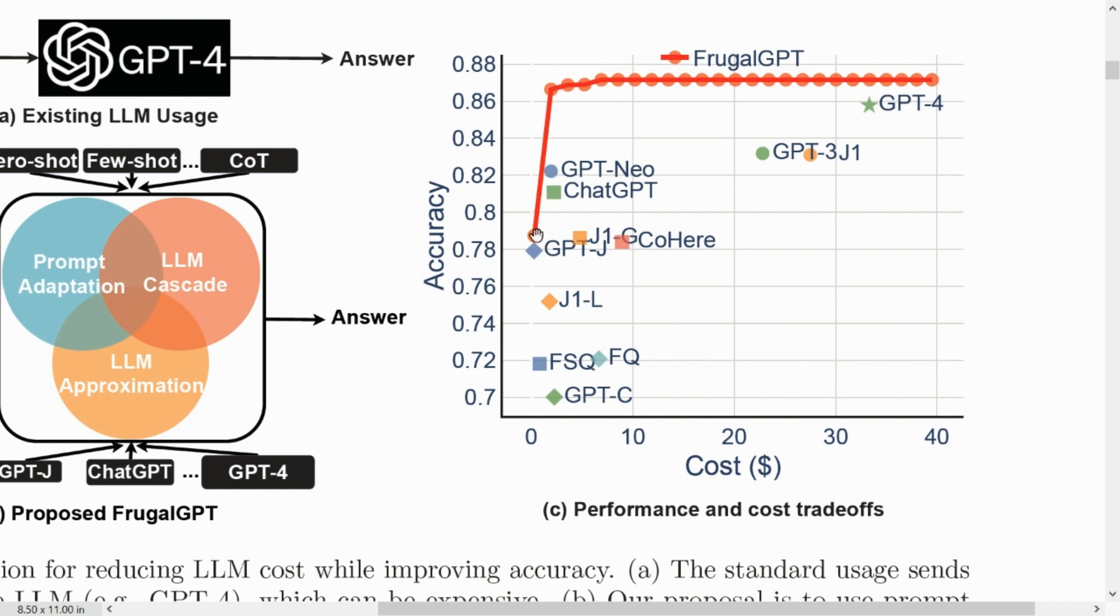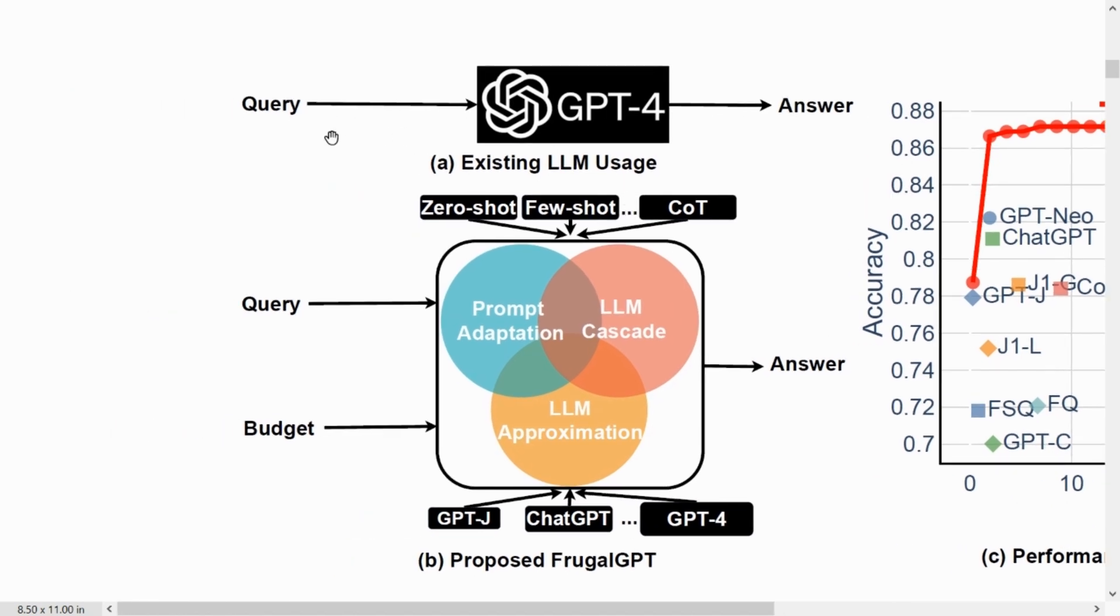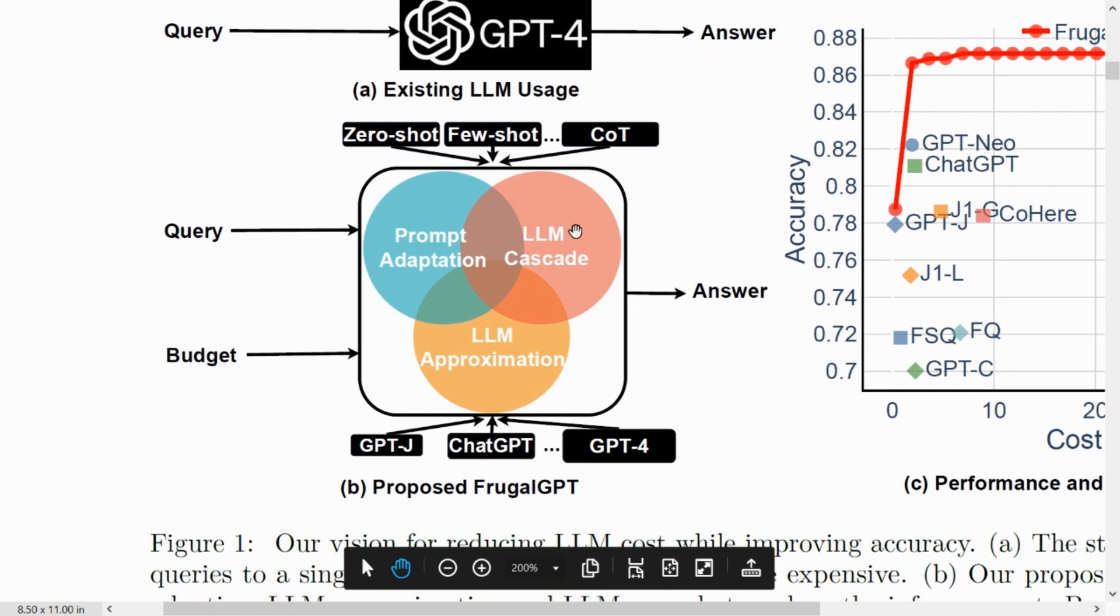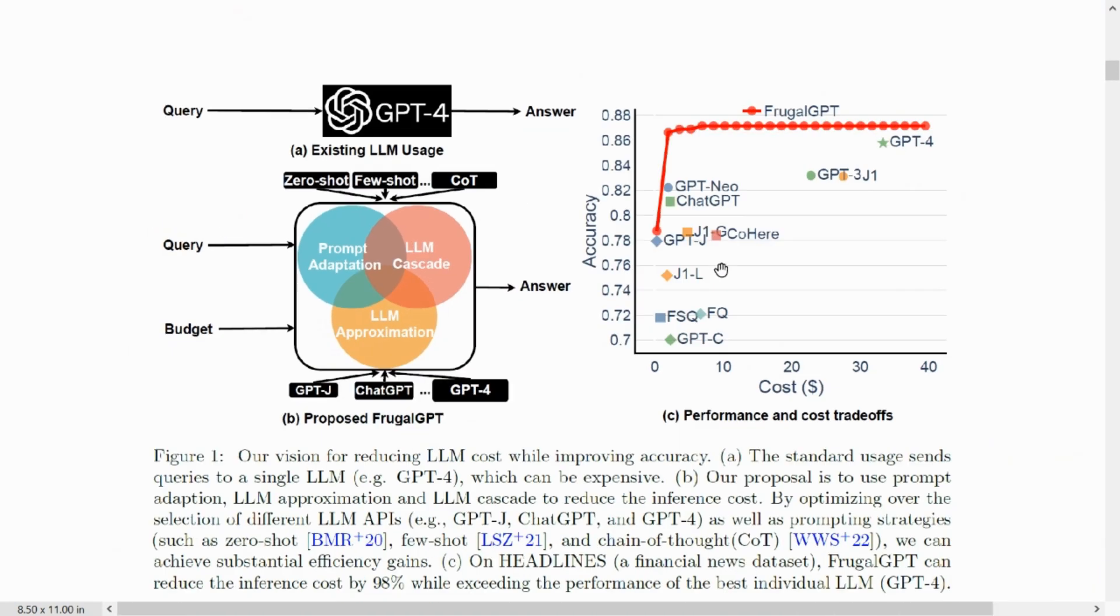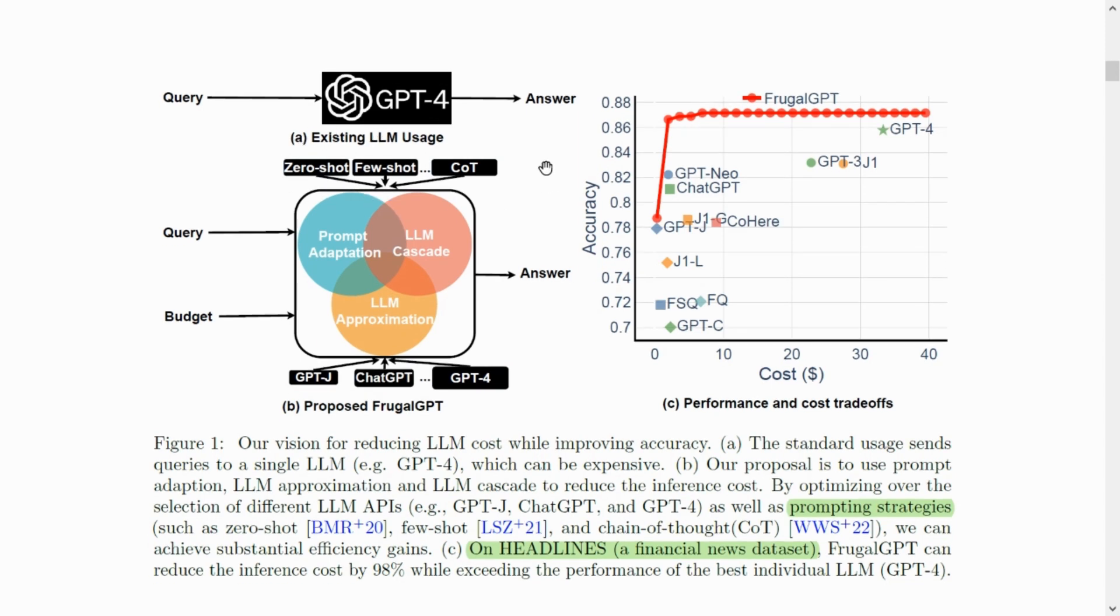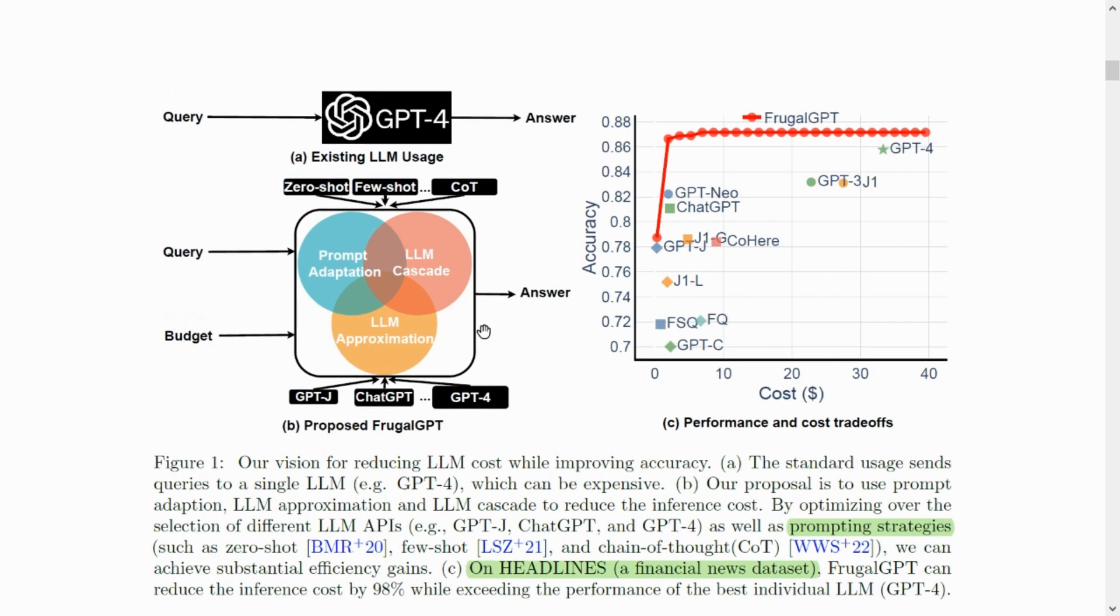The new GPT that the paper has termed is the FrugalGPT. So if you see in this graph, the accuracy of FrugalGPT is on the higher side, even higher than GPT-4, and we can even bring down the cost to a very low value. Now in the traditional sense, in the existing LLM usage, what you would do is put in a query to an LLM provider, in this case GPT-4, and then you get an answer. But the proposed FrugalGPT will use three methodologies to improve the cost, or to lower the cost, and to improve the accuracy. It is going to use so many LLMs and actually decide which LLM to use. You're going to use different strategies such as zero shot, few shot, or chain of thoughts strategies. And then it would also have a limitation on the budget which you are going to specify.